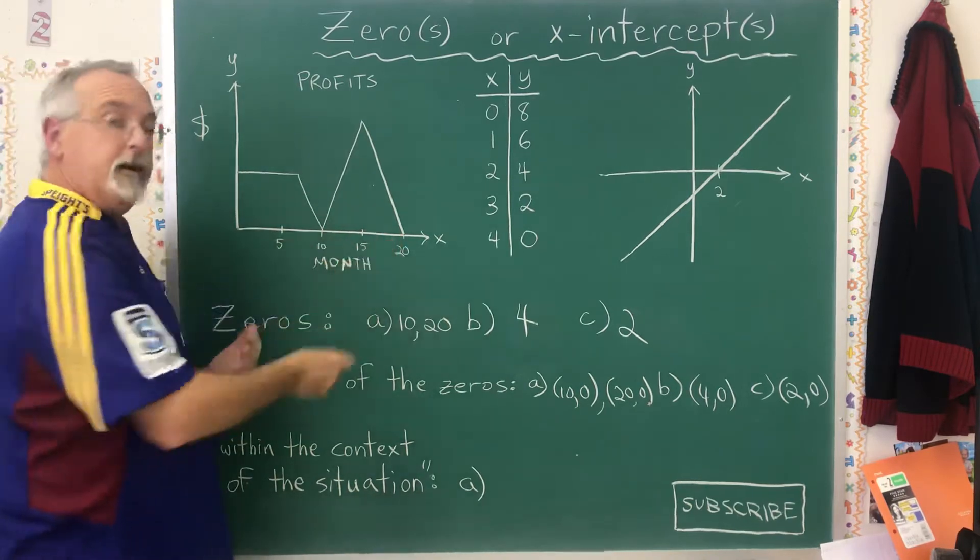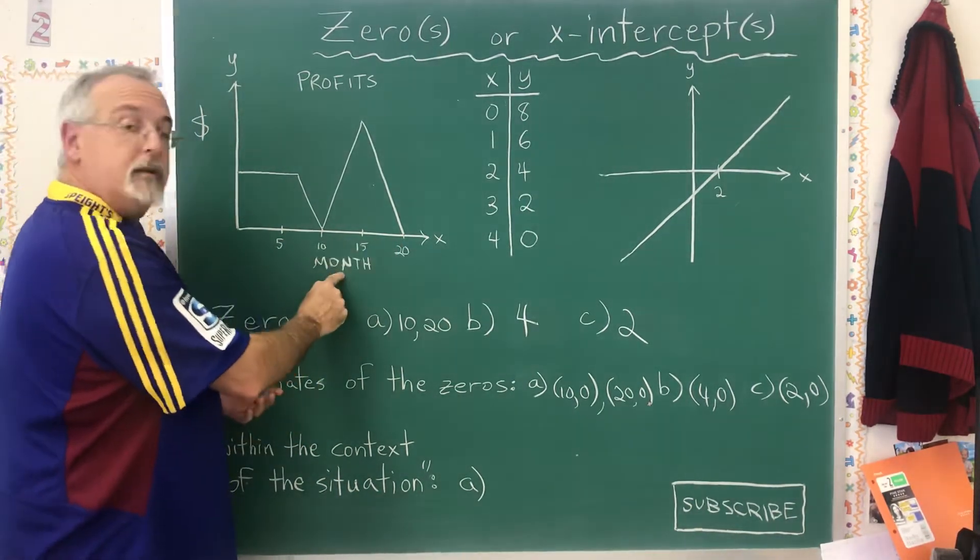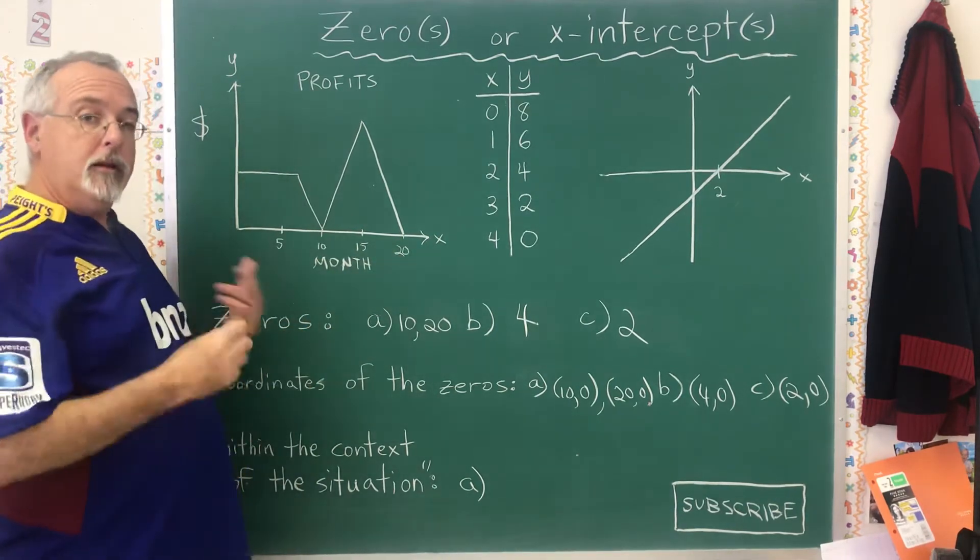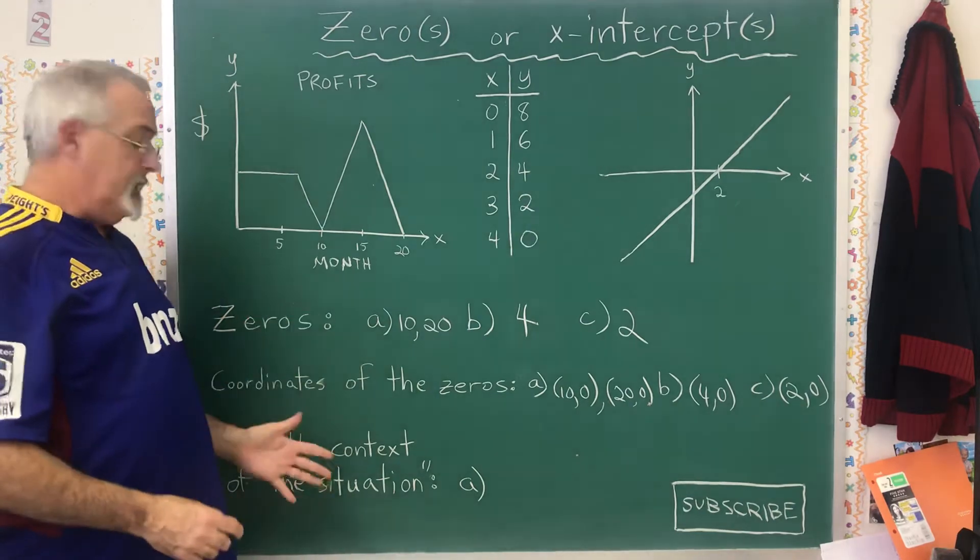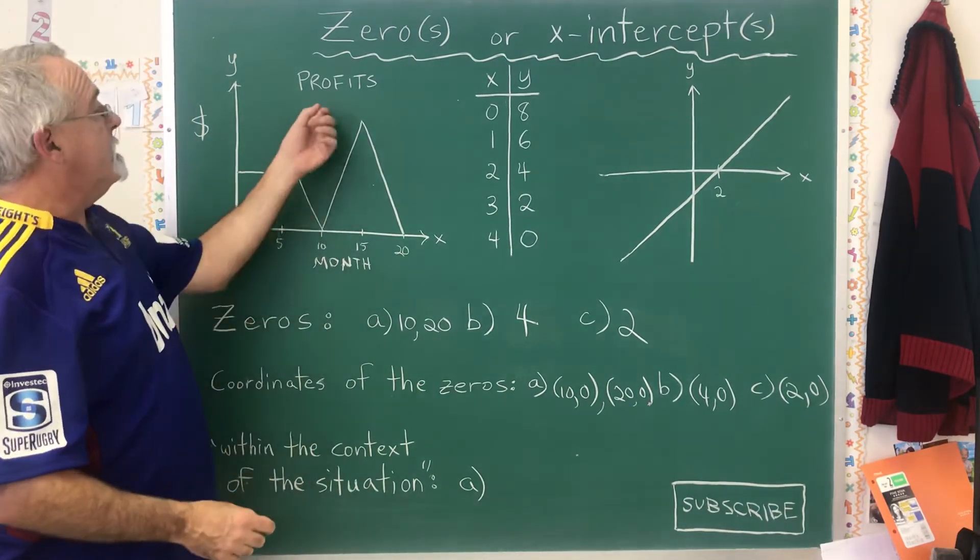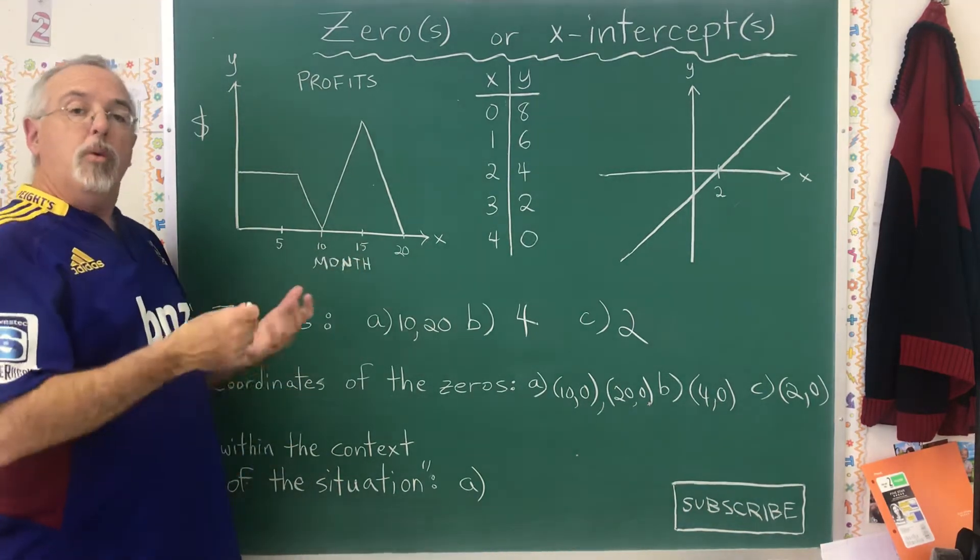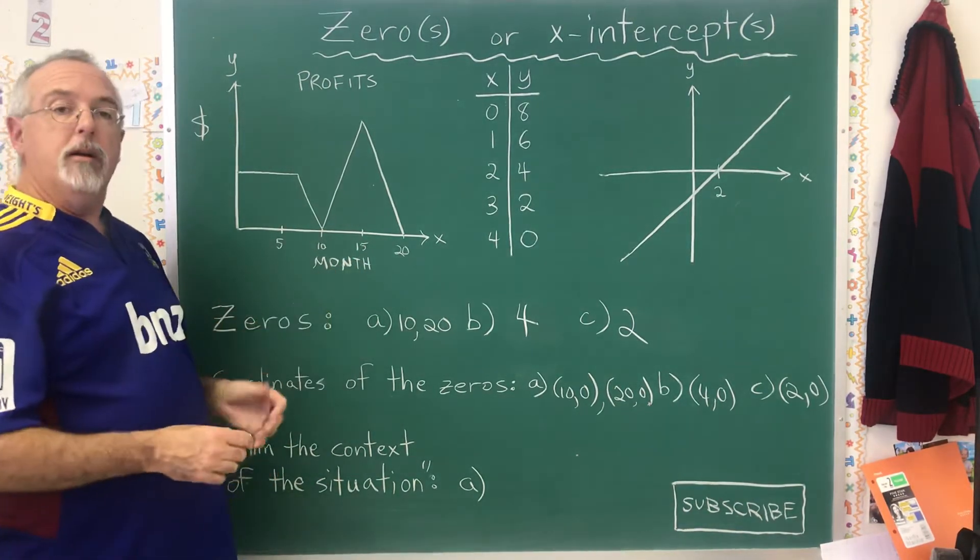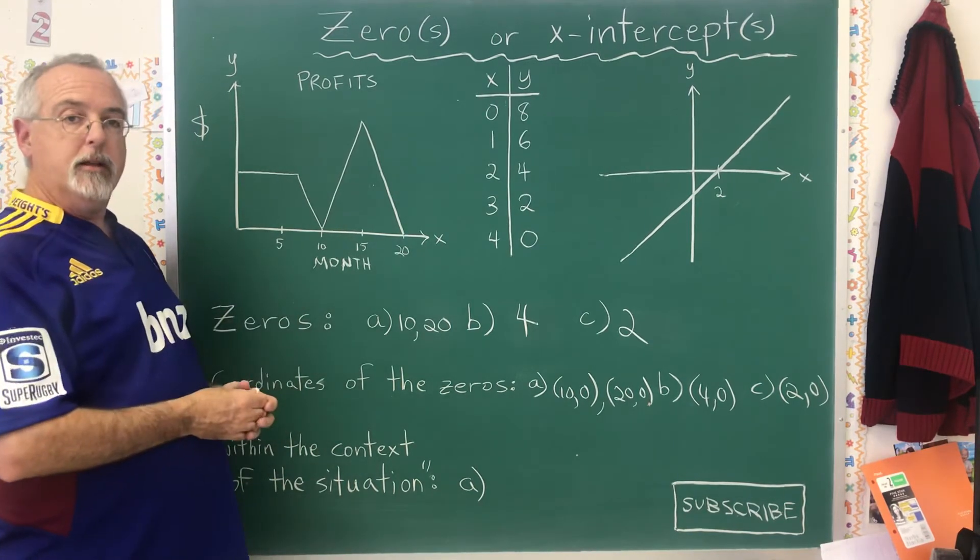For A, the answers are 10 and 20. It's still 10 and 20, but it's 10 months and 20 months, and that's still not enough of an answer within the context of the situation. A good answer for the zeros of this situation within its context is 10 months and 20 months, which are the months where there are no profits. That's answering within the context of the situation.